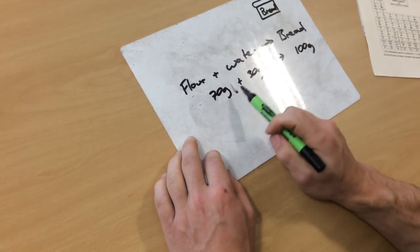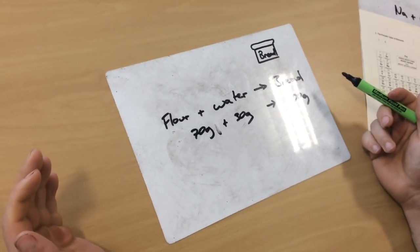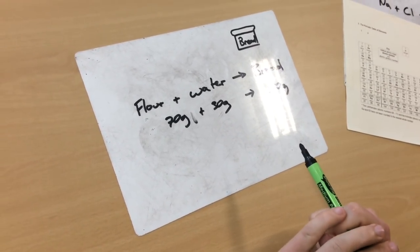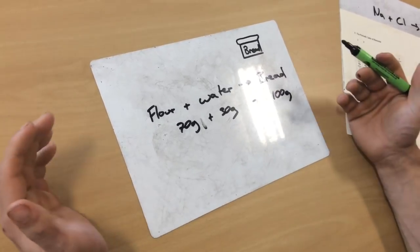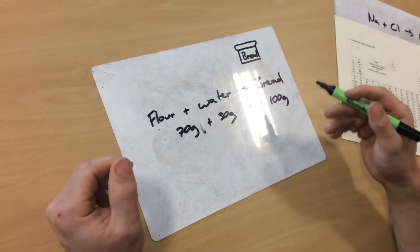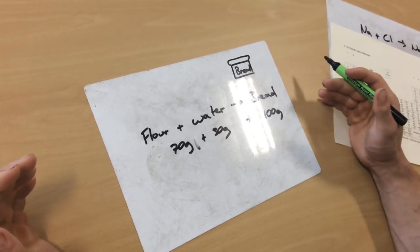So if I add those two together, look, the left side equals the right side, which you'd expect. Now, maybe tomorrow night I'm getting my girlfriend coming over, so I need to make a bit more bread. But I need to know what the recipe would be if I was going to make some more. So this time I'm going to make 200 grams of bread instead of 100. How could I work that out?